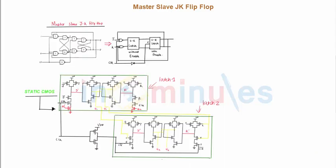Here on the screen I have drawn the gate level diagram of a master-slave JK flip-flop. It might look very intimidating — we have already studied this in the previous classes. Let's understand how we get this gate level diagram so you don't have to mug it up.